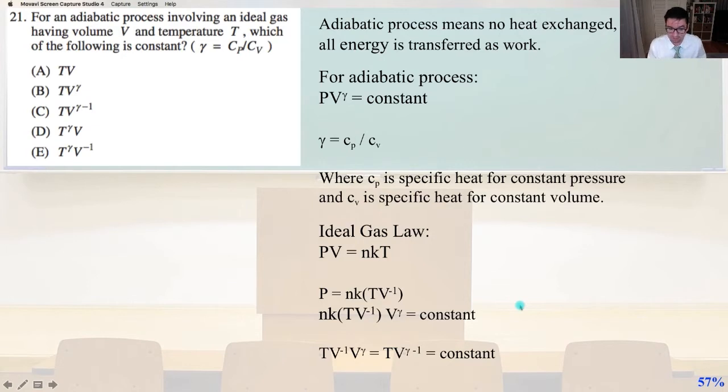The ideal gas law PV equals NkT. We can go from there. P equals Nk times of quantity TV, V raised to the minus 1. So, Nk TV raised to the minus 1 times V gamma equals constant. TV to the minus 1 V gamma equals TV gamma minus 1 equals constant. And that is letter C.